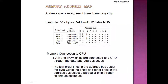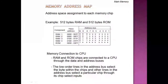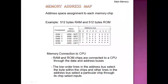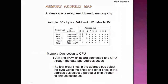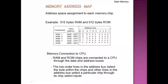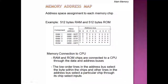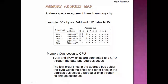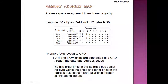The address space assignment to each memory chip is found and we can justify the address range bits: 0000 to 007F and 0080 to 00FF. For memory connection to CPU, RAM and ROM chips are connected to the CPU through the address and data buses. The lower order lines in the address bus select the byte within the chips, while lines 8 and 9 select a particular RAM chip and line 10 determines if it is a RAM or a ROM.